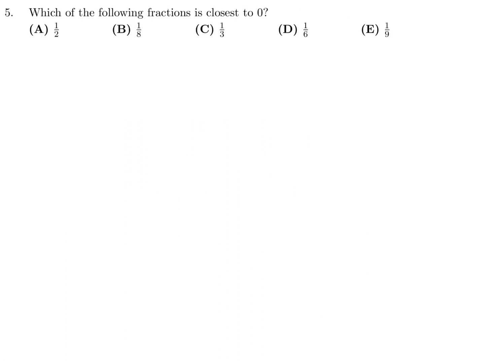Which of the following fractions is closest to 0? I think it would be easier if we convert to decimals. 0.5, 0.125, 0.333, 0.166, and 0.111. And the one that is closest to 0 is actually the smallest one, and that is this one right here. So number 5, the answer is E.